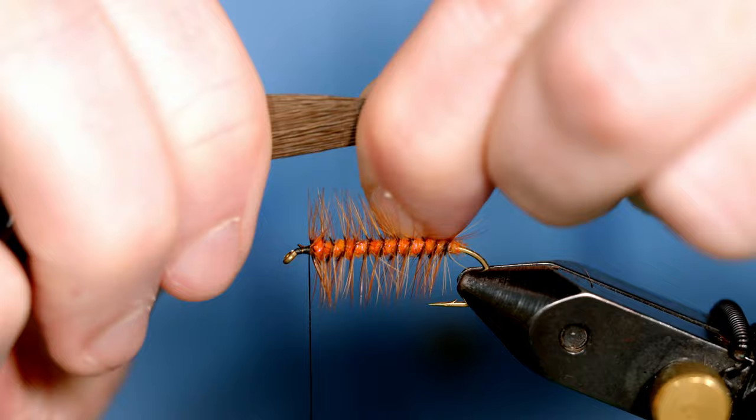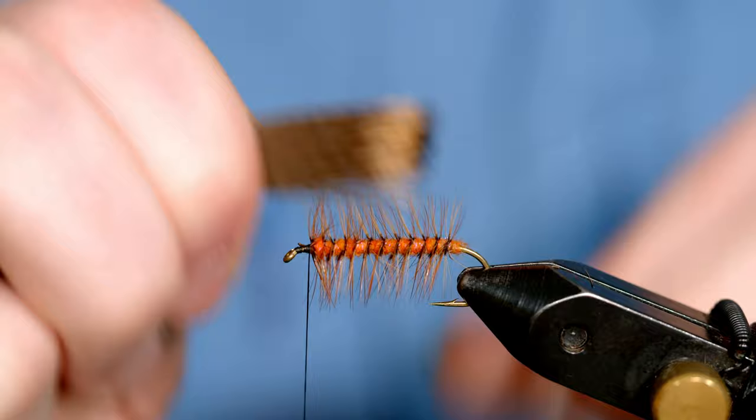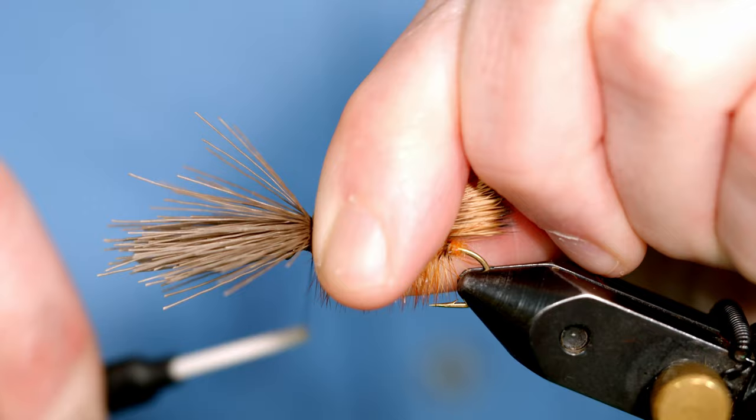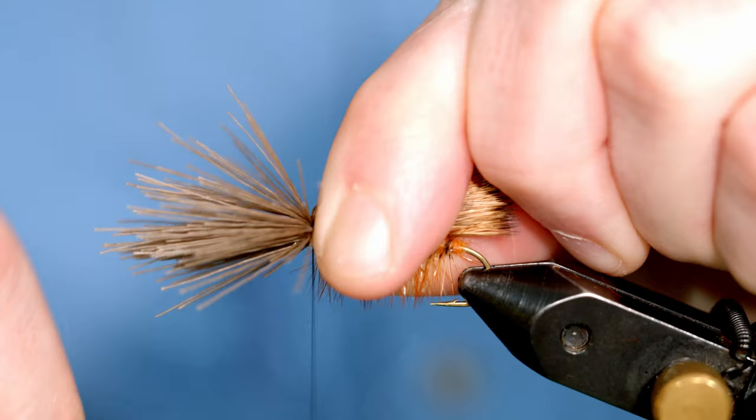Then with your right hand, you're going to estimate about how long that wing is. It's going to be about the length of the hook. I'm going to transfer it to my left hand again. Hold it on top of the hook. Take two gentle wraps around it, then tighten it a little bit. Take two more and then really tighten it.